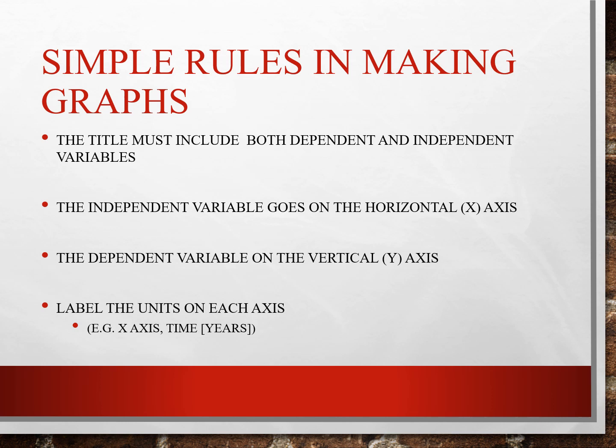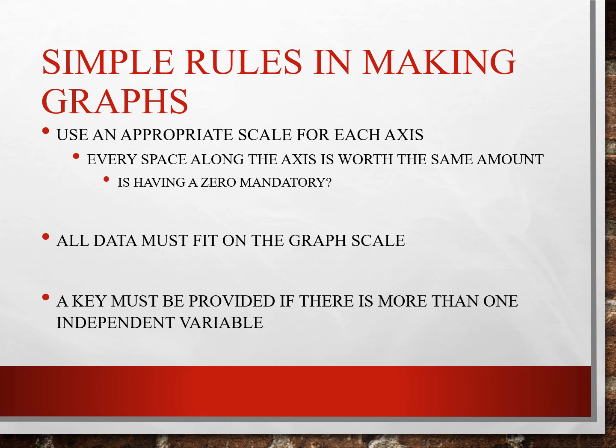Simple rules in making graphs: the title must include both dependent and independent variables. The independent variable goes on the horizontal axis, while the dependent variable goes on the vertical axis. Label the units on each axis. Use an appropriate scale for each axis. Every space along the axis is worth the same amount. All data must fit on the graph scale. A key must be provided if there is more than one independent variable.